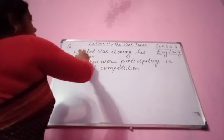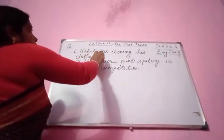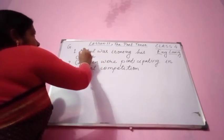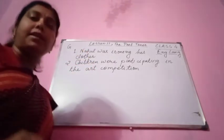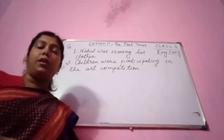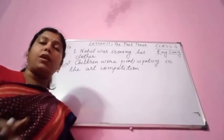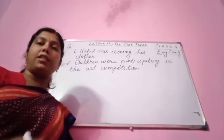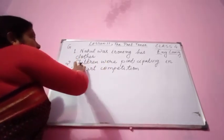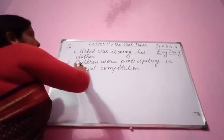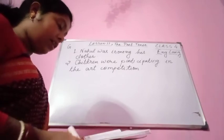One more thing — please follow here. Nakul is singular, so with Nakul we use 'was': Nakul was ironing his clothes. See the subject — that is singular, third person. Now with a plural subject we are going to use 'were': Children were participating in the art competition.